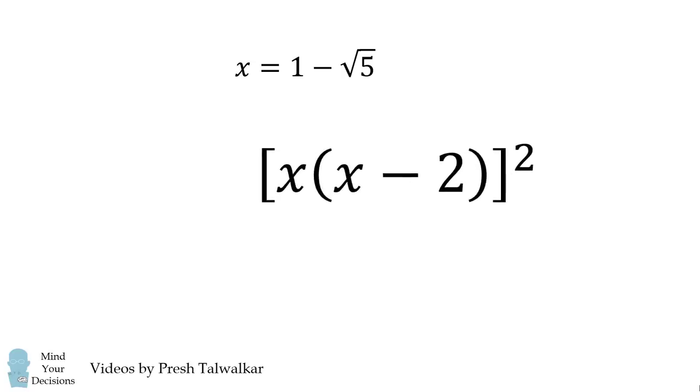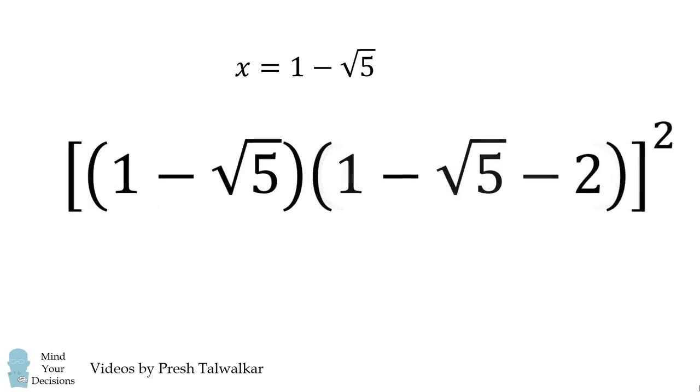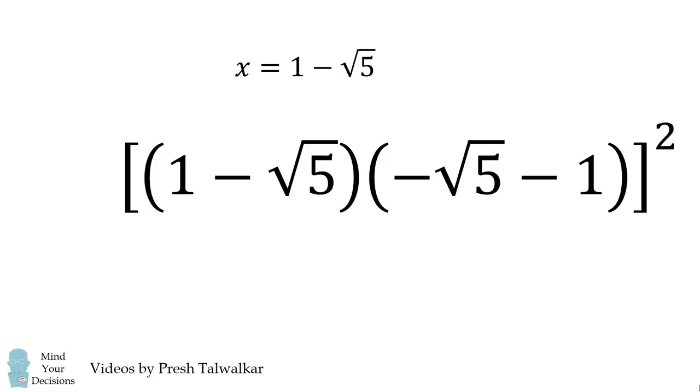Now let's substitute. x is equal to 1 minus the square root of 5. The second factor will simplify to be negative square root of 5 minus 1.